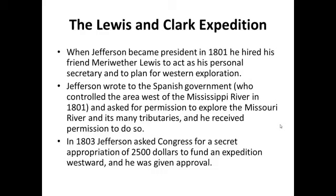When Thomas Jefferson became president in 1801, he hired his personal friend Meriwether Lewis to act as his secretary and to plan for Western exploration. Jefferson understood that Anglo-Americans were going to be driving west — this process of settlement was already well underway. He seemed to understand that Native Americans were, in his view, an impediment to Anglo-American expansion west, a challenge that Anglo-Americans were going to have to contend with.